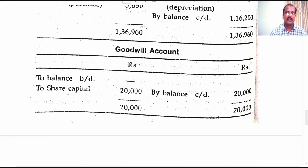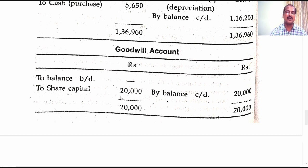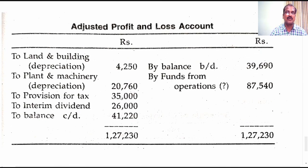The next account is the goodwill account. The opening balance of goodwill was nil, and the closing balance was 20,000. The company bought goodwill valued 20,000 rupees by way of issuing shares. The journal entry is: goodwill account debit to share capital account, 20,000. That is posted here and the account is tallied.